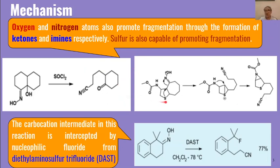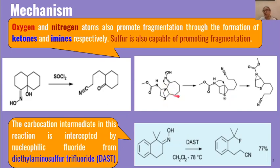Similarly, in this oxime, the presence of sulfur at the alpha position promotes fragmentation. With the breaking of this carbon-carbon bond, a stable nitrile is formed. The sulfur then shares its lone pair of electrons and a three-membered sulfenium ion is formed at this place. Since sulfur promotes neighboring group participation, the nitrogen then attacks at this position and the positive charge of sulfur is neutralized.